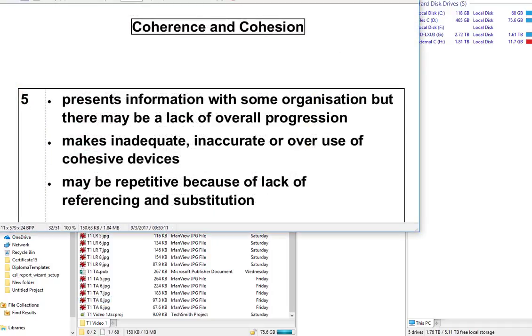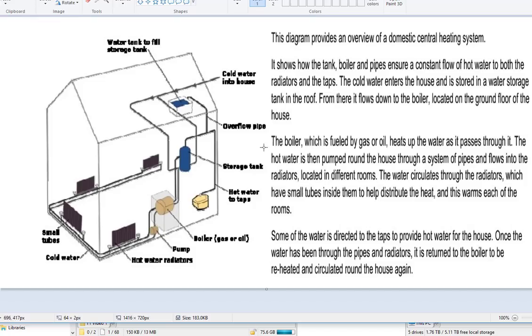Let's move on and have a look at the coherence and cohesion. From there, it's a specific point. Located on the ground floor, that's good. As it passes through it. Because you have a process here, right. As it passes through it. Flows into the radiators. There are some references in here. And this warms each of the rooms. Here, then, because it's different stages of the process.